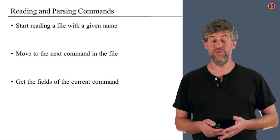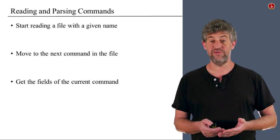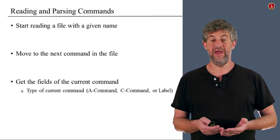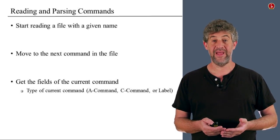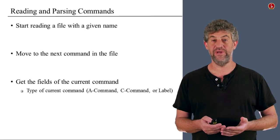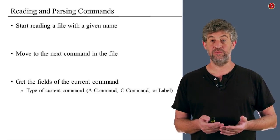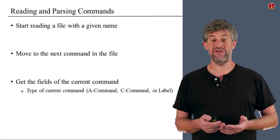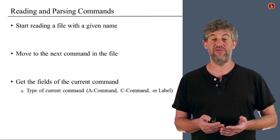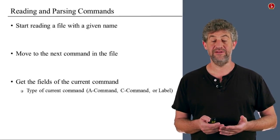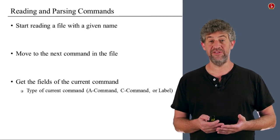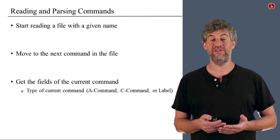The third thing you'll have to do is break the command you've just read into its components. First, you need to know what kind of command it is. In our language, we have A commands and C commands. There are also pseudo commands that define labels — these are not translated to machine language, but our assembler will need to recognize them. Once we know that, we'll probably want to give the rest of the program easy access to the different parts of the command.